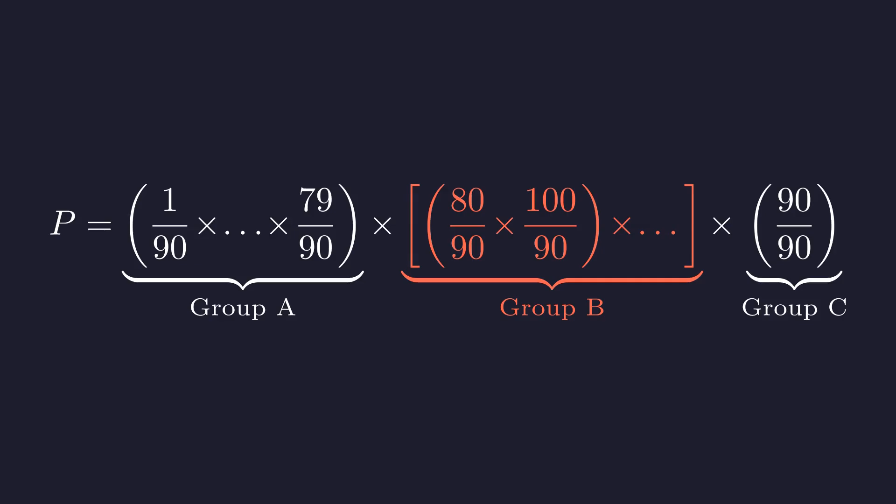Group B is the product of our 10 pairs. Since the product of each individual pair is less than 1, the product of all 10 pairs must also be less than 1. And group C is simply the number 1. It doesn't change anything.